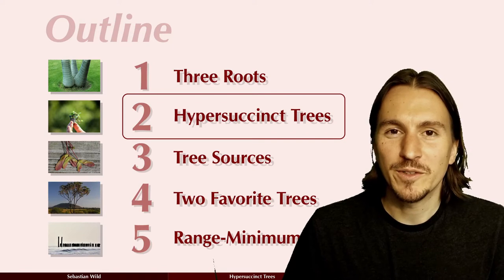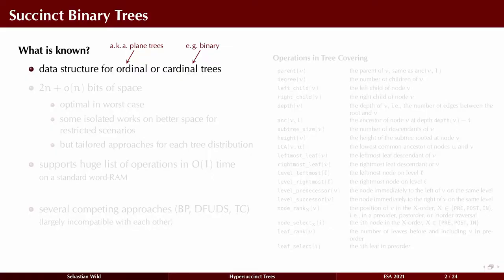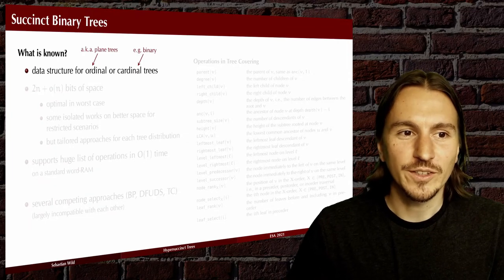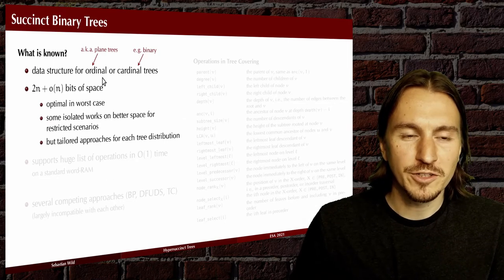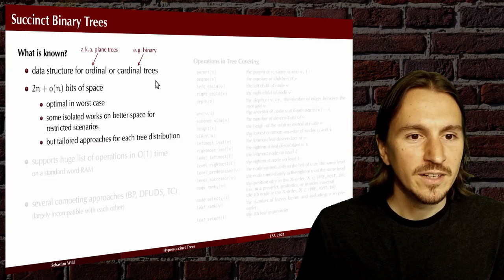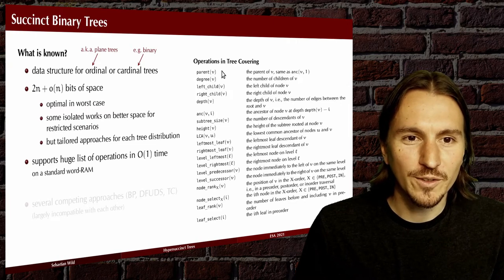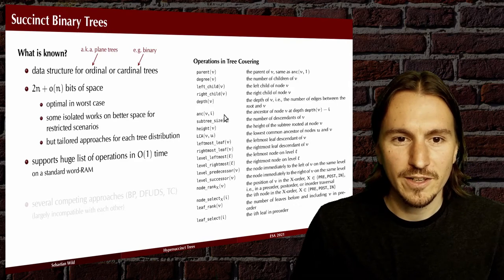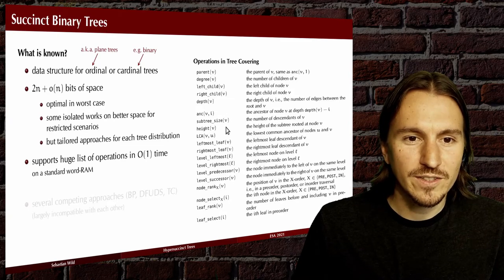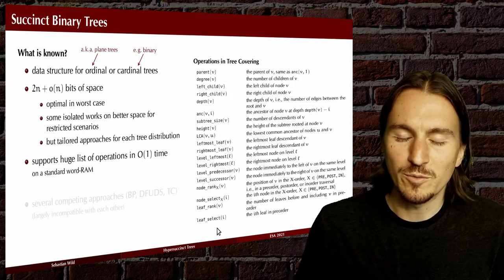There are data structures known to store a tree succinctly — that means with 2n plus little-o of n bits of space — and this works either for an ordinal tree or for a binary tree. We can support a long list of operations: navigate locally to parent or child links, find depths or ancestors or the ancestor at a certain depth, find how big a subtree is, how high the subtree rooted at a certain node is, lowest common ancestors, and further specialized operations.